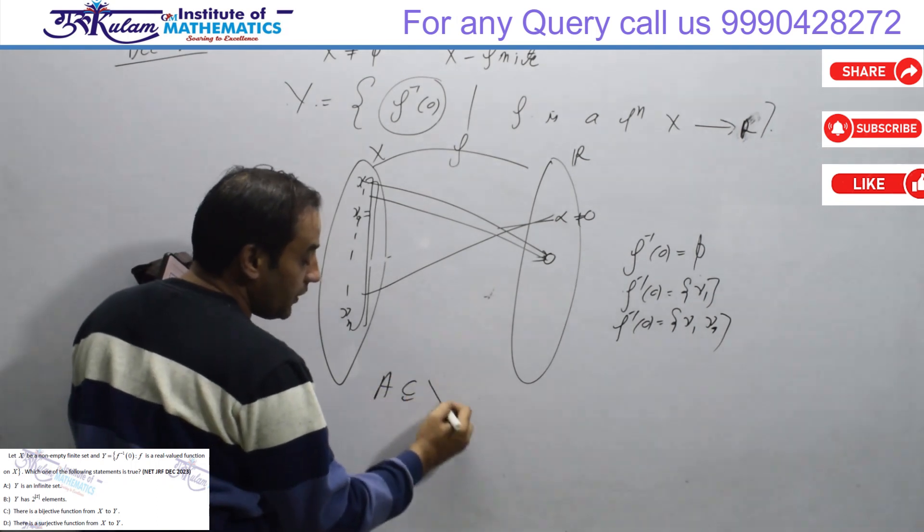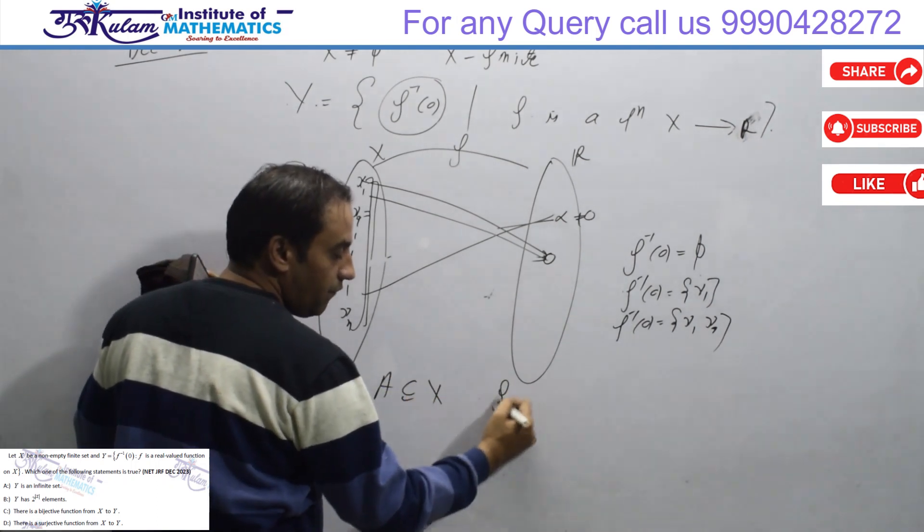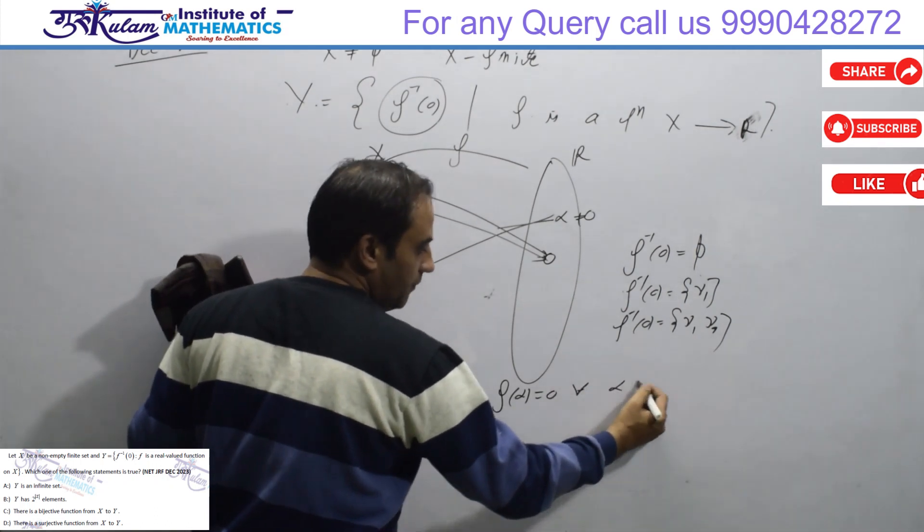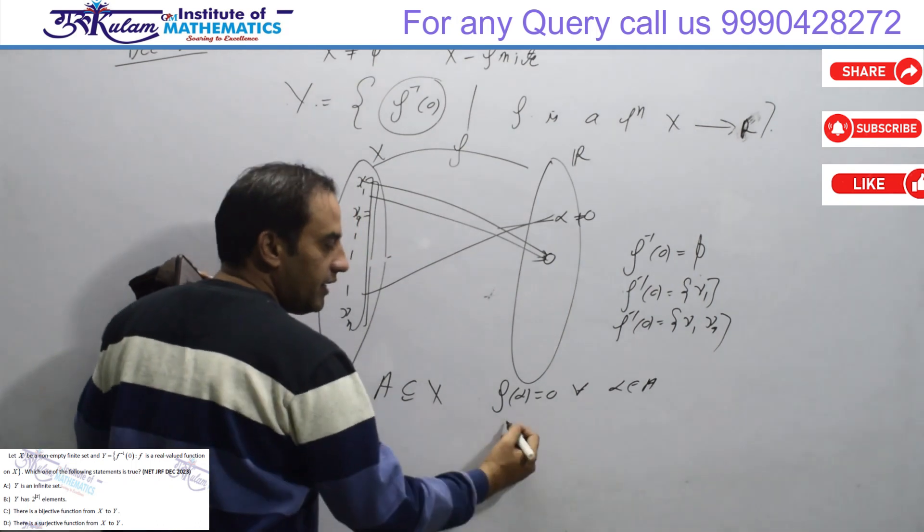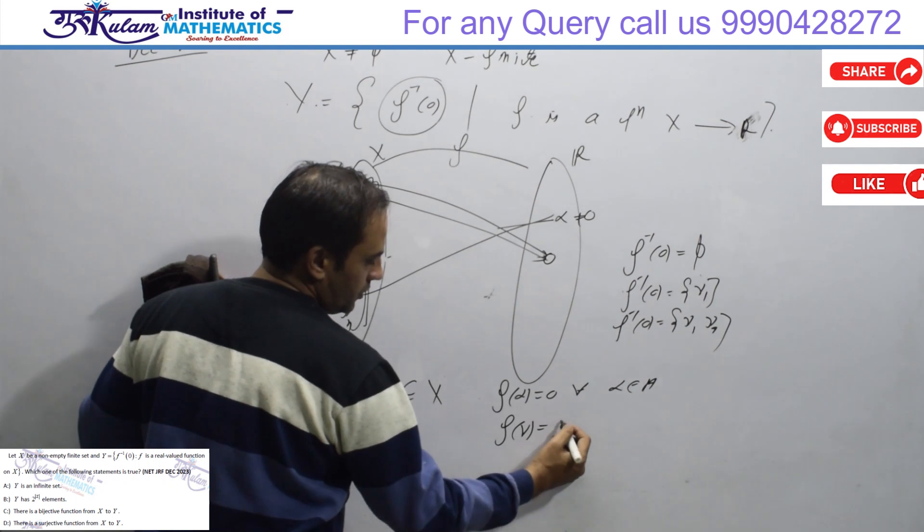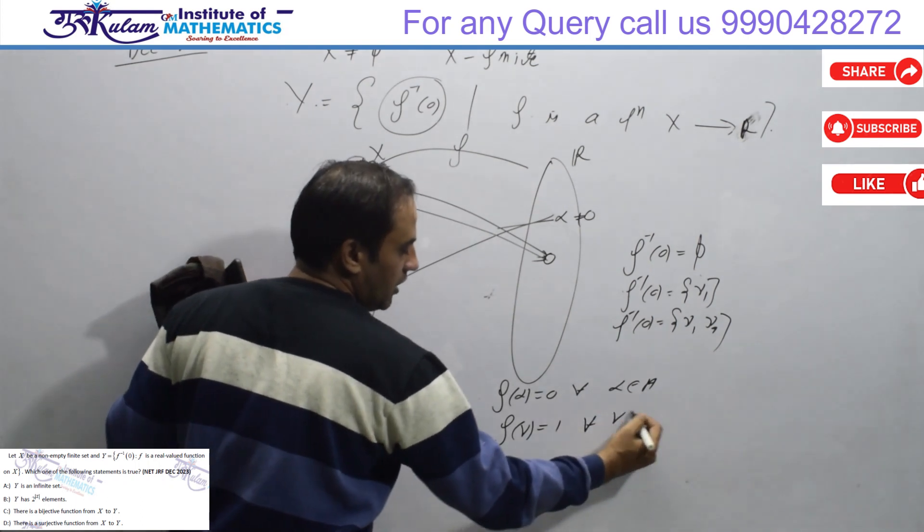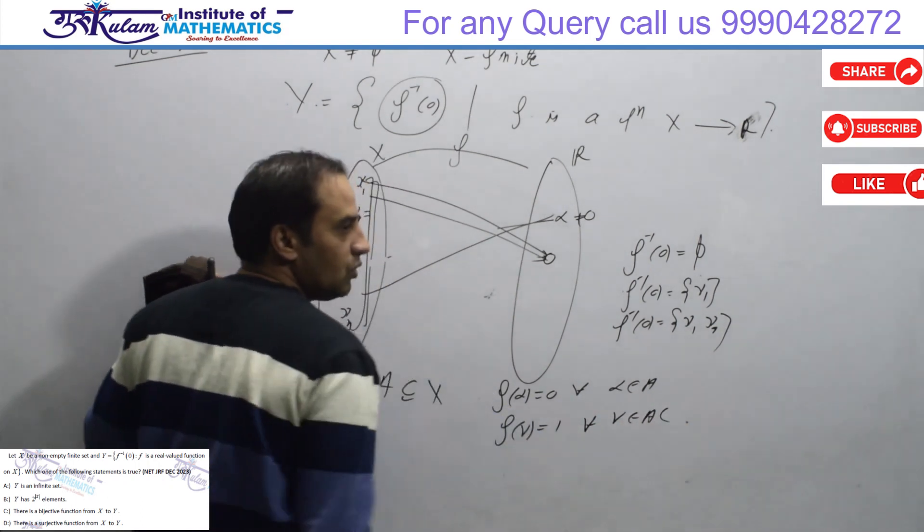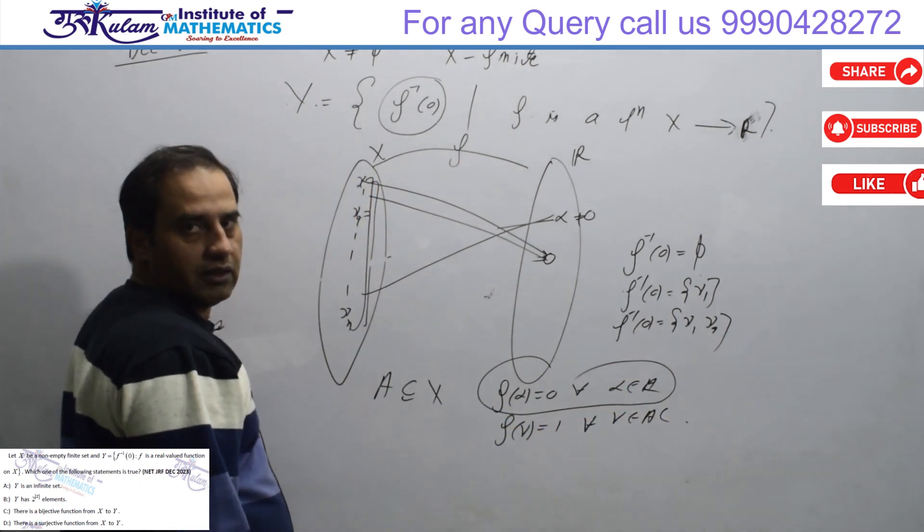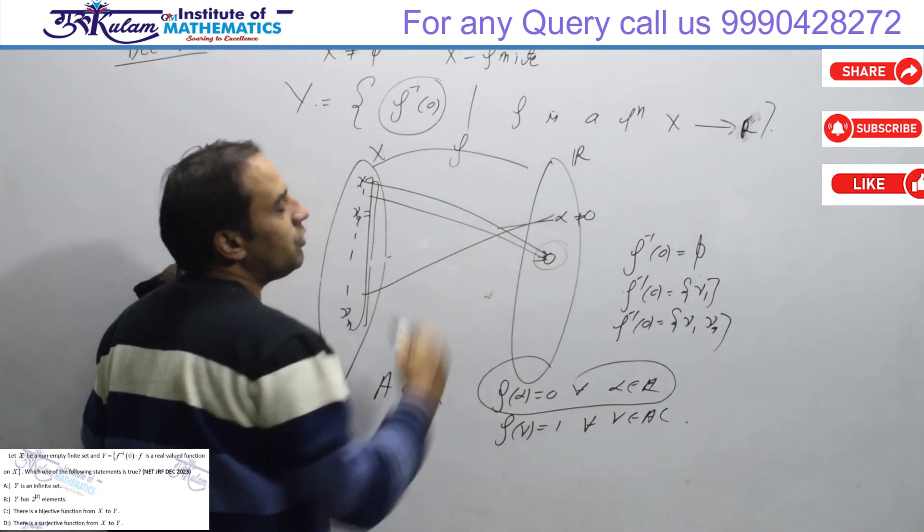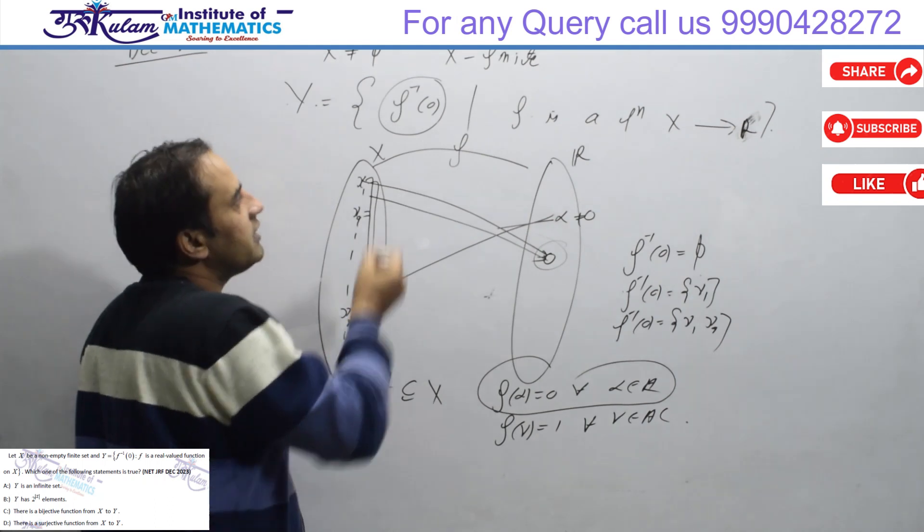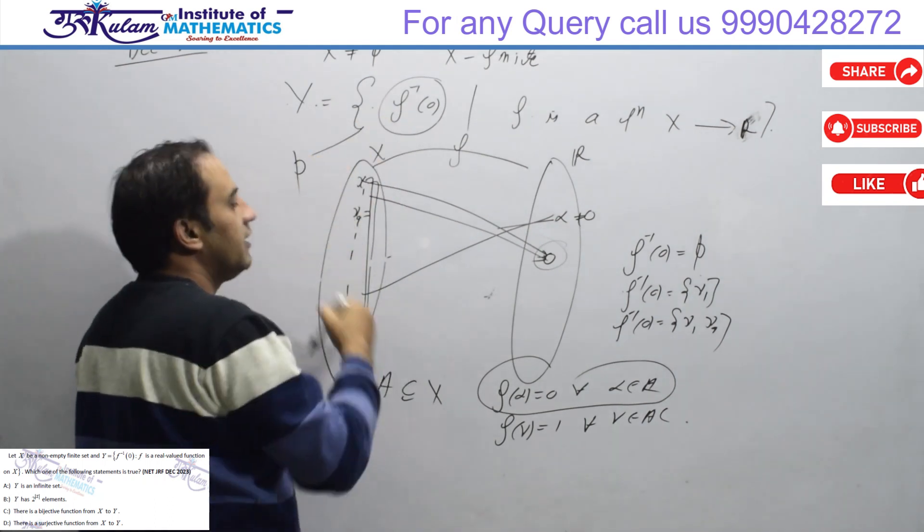Take any subset A of X such that f of alpha equals 0 for all alpha belongs to A, and the remaining elements, f of gamma equals something non-zero for all gamma belongs to A complement. In this case, f inverse 0 will be A. So premise is possible if someone sees the premise.